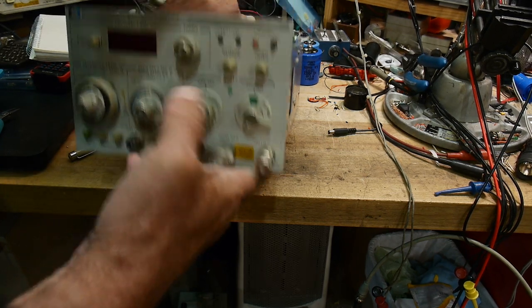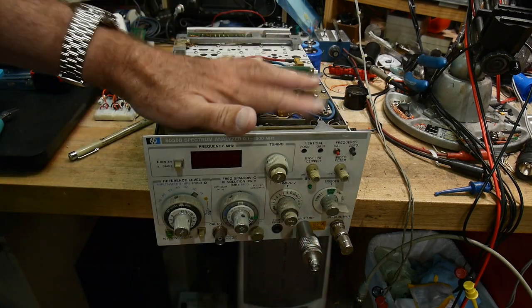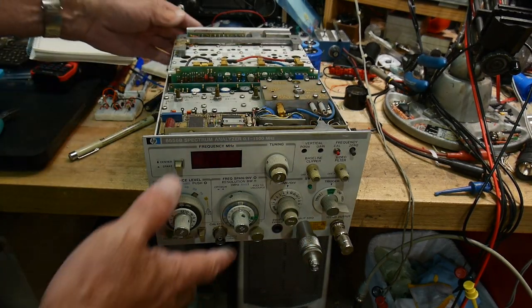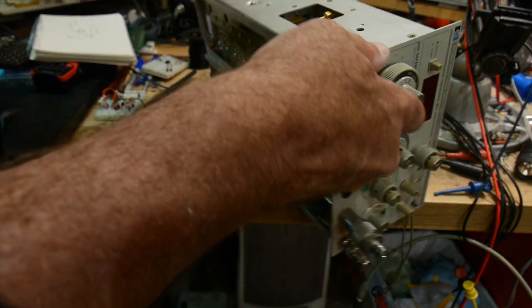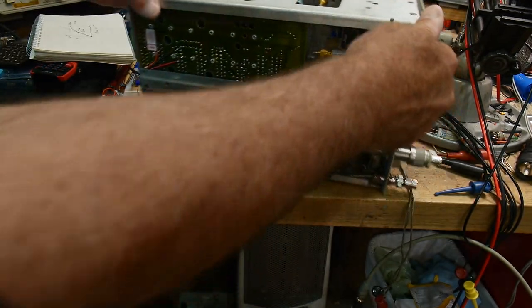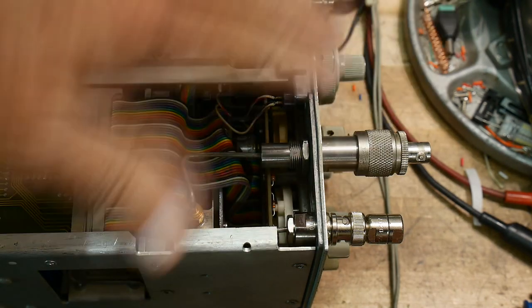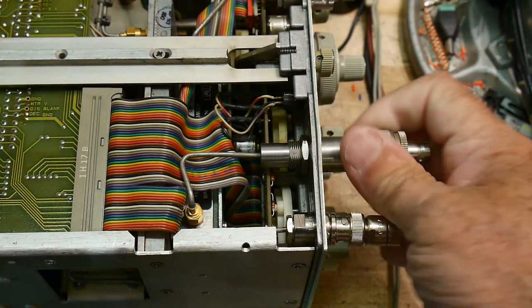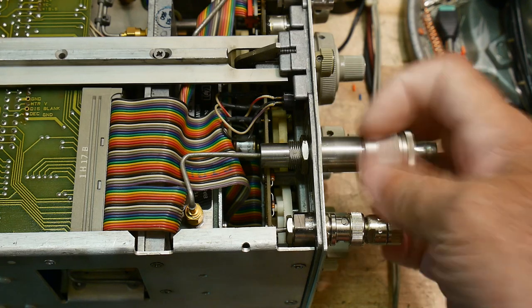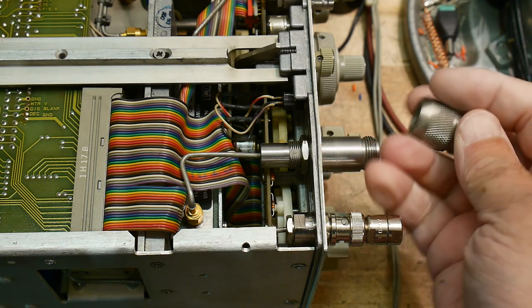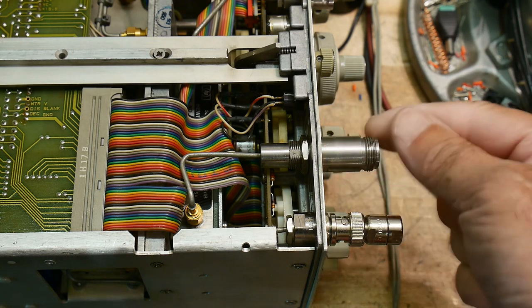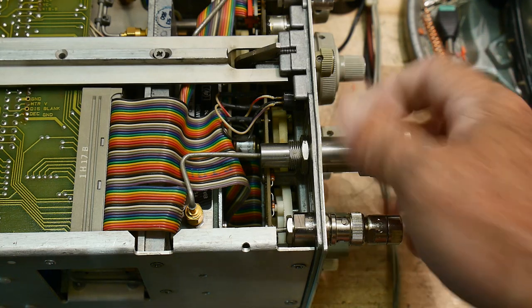So how does this thing handle that much power? If we look underneath it and at the back, this is the input here. I have an adapter on here right now - this is an N connector to BNC adapter, so this is the input port for the spectrum analyzer.